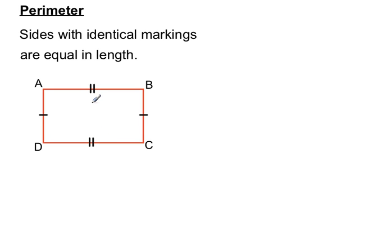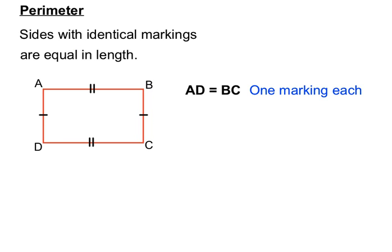We're able to say that AD, the left-hand side, because it's got a single marking on it, is equal to BC, the right-hand side, because it's also got a single marking on it. They have one marking each, so they're equal to each other.